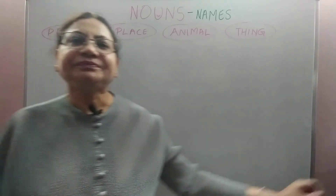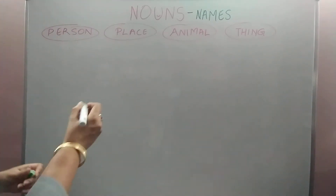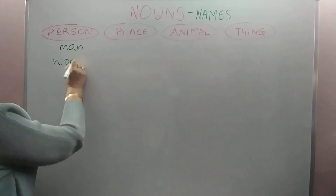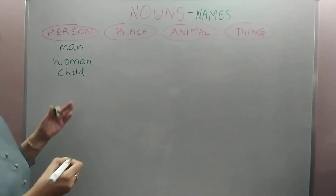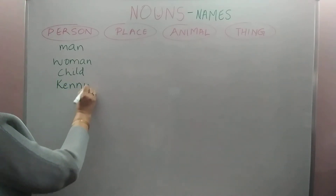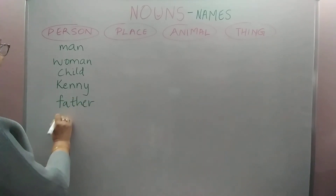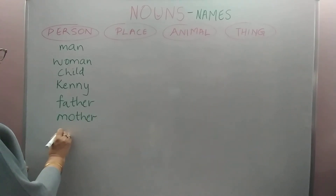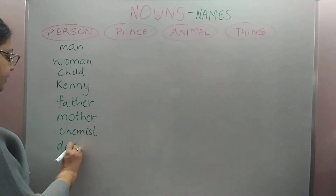Let us begin with the names of persons. The name of a person can be a man, a woman, a child — these are all nouns. They can be the name of a person, for example Kenny. It can be your father — father is also a noun. Mother is a person and is also a noun. Or it can be a chemist — chemist is also a noun. Or a doctor is also a noun.